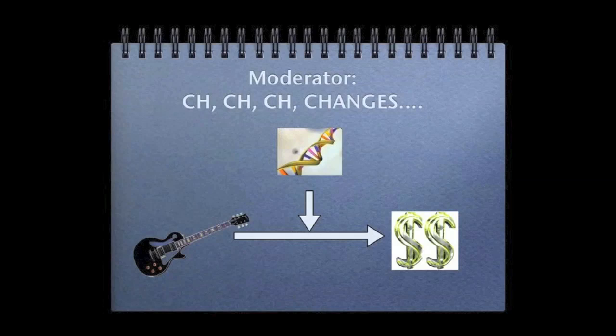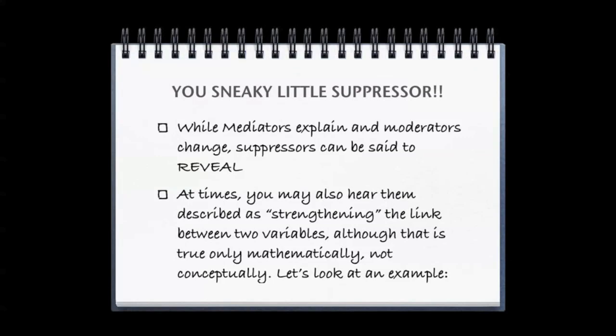So, not to belabor this point, but it's important, so I'm gonna. Moderator. Good genes. Changes the course of what happens as a result of getting the guitar. Mediator. Practice is what happens as a result of getting the guitar, and shows why getting the guitar leads to something else, like the record deal.